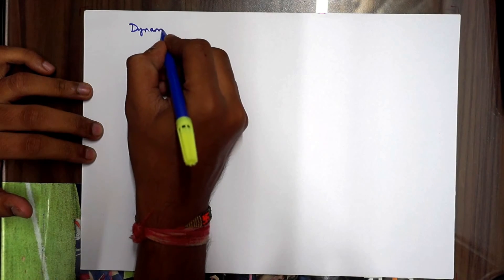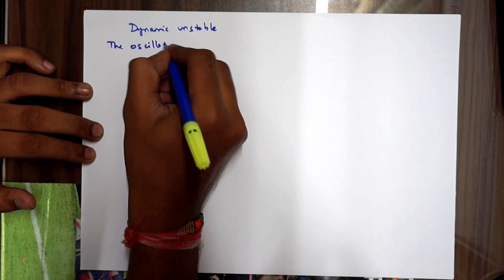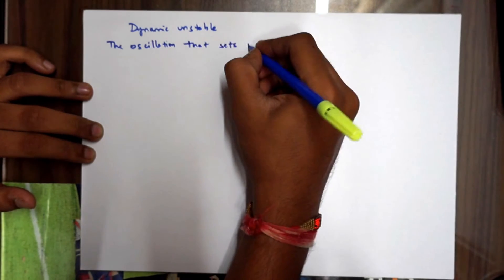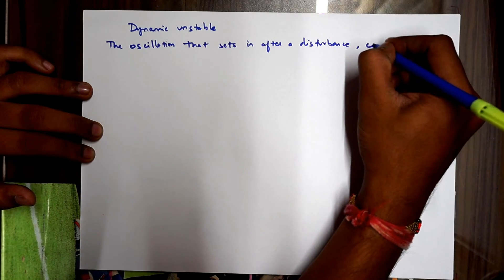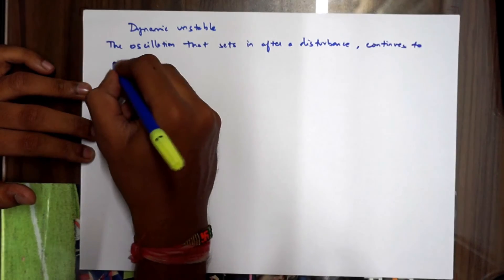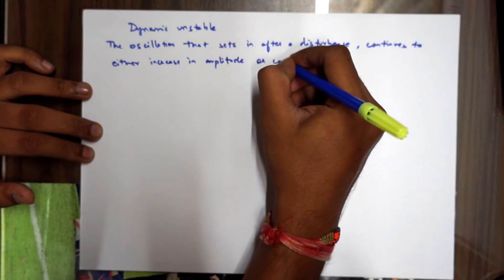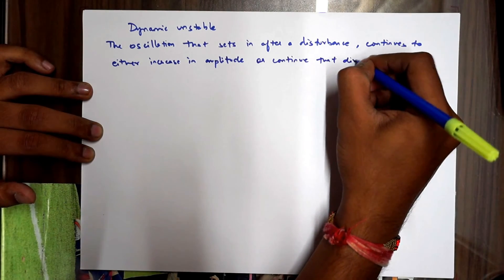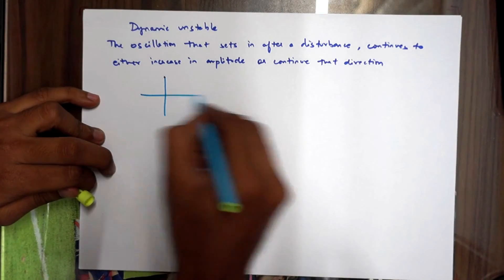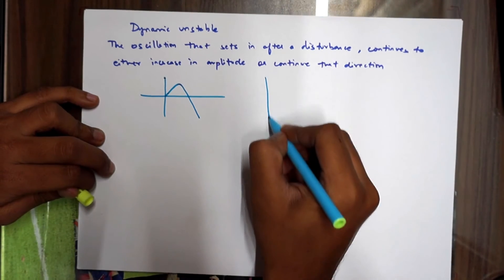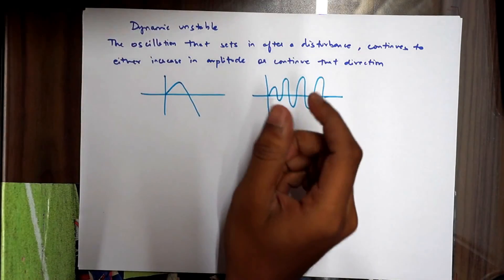For dynamic unstable, when the oscillation that sets in after a disturbance continues to either increase in amplitude or continues in that direction, the aircraft is said to be dynamically unstable. For example, if a disturbance sets in, it will either continue in that direction or keep on increasing in amplitude.